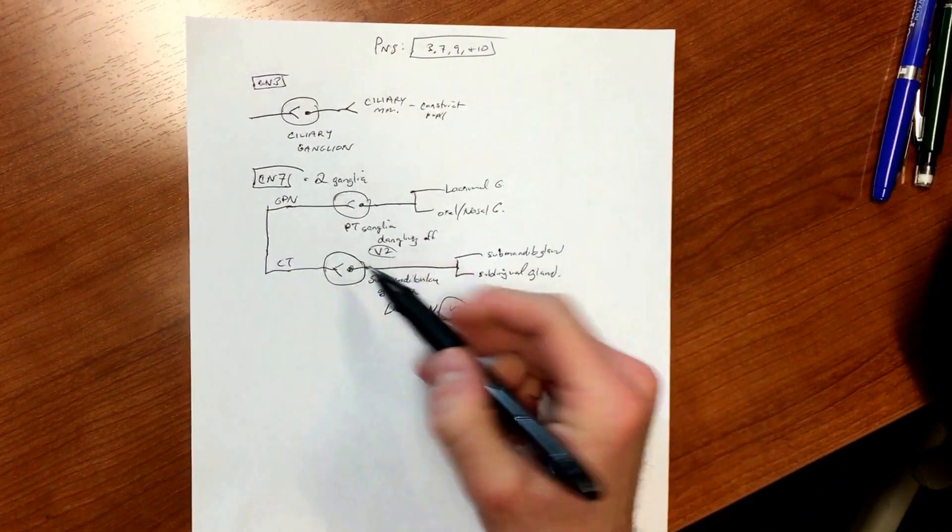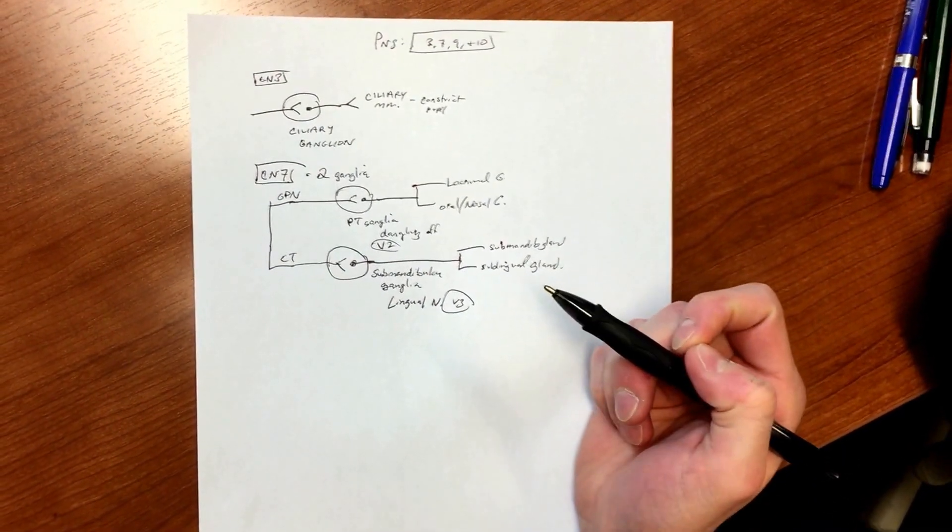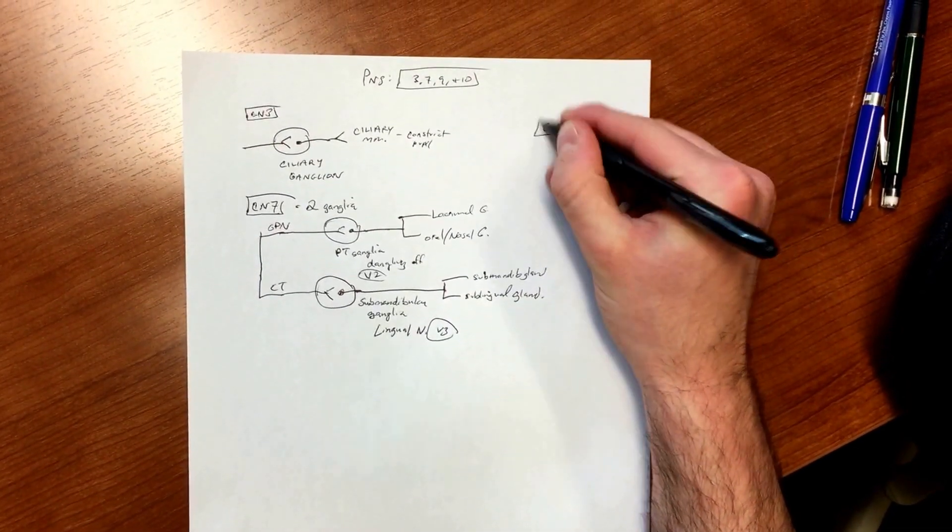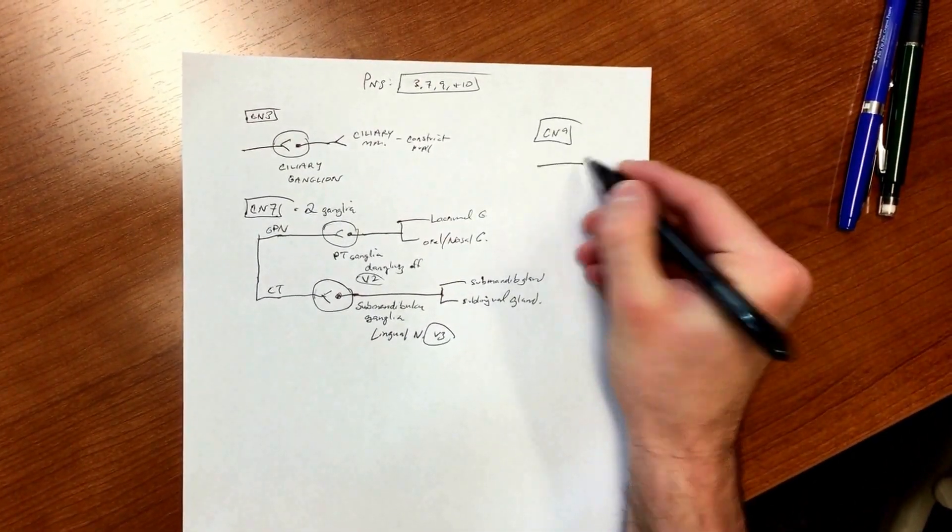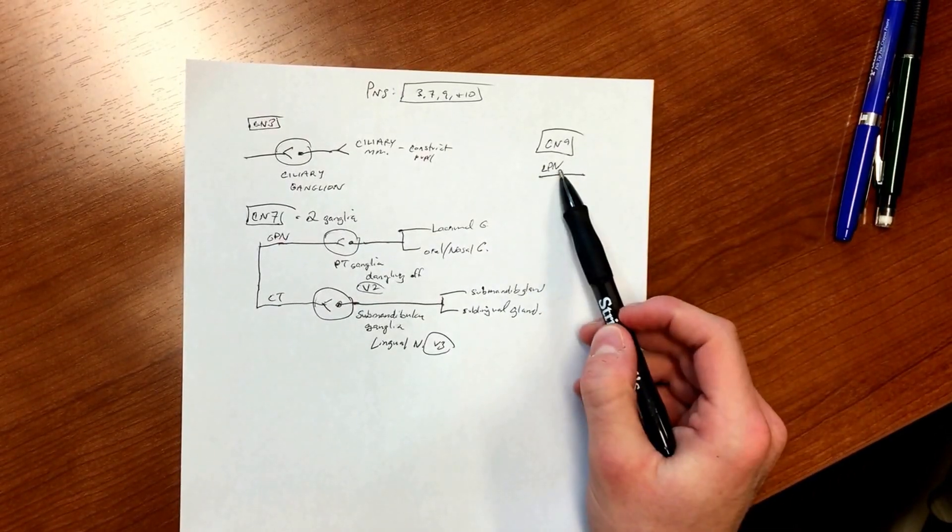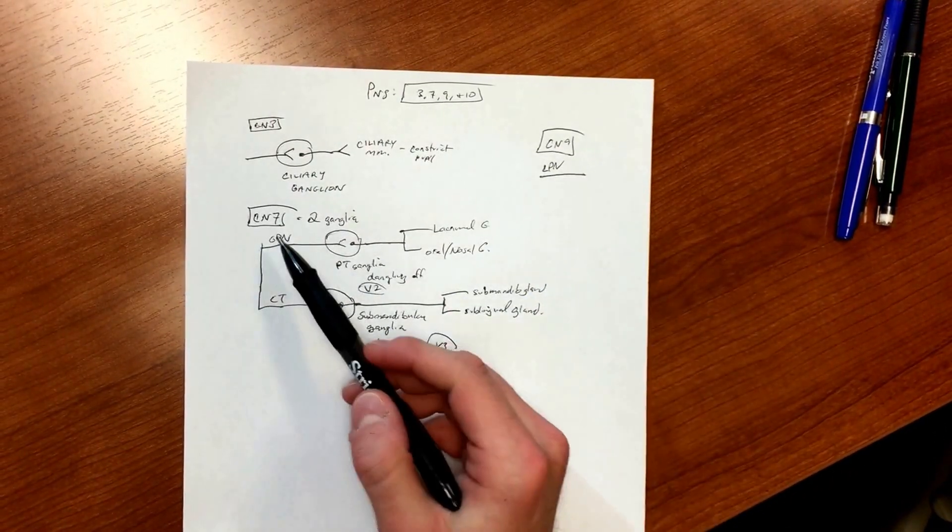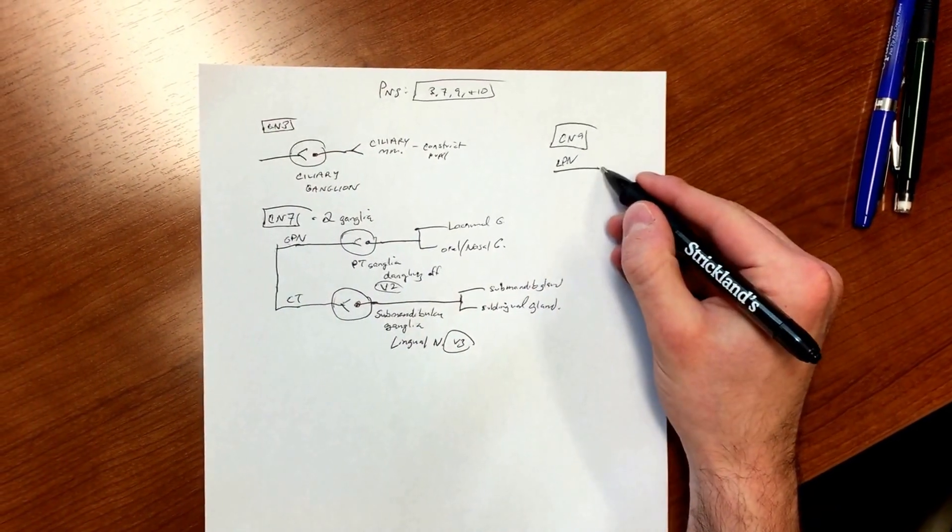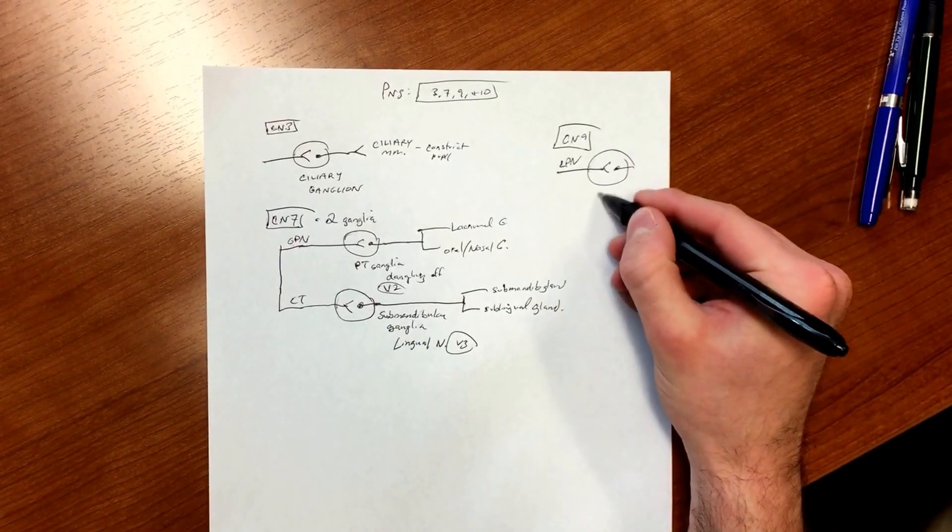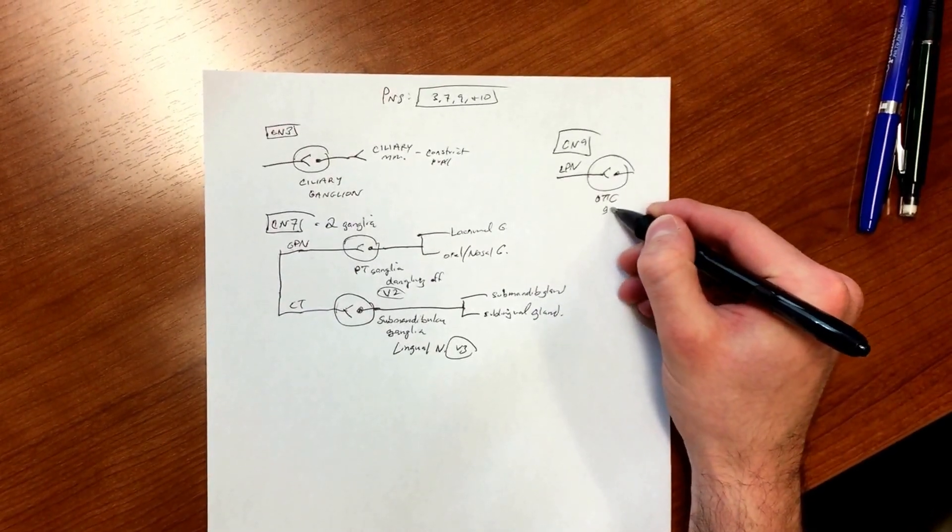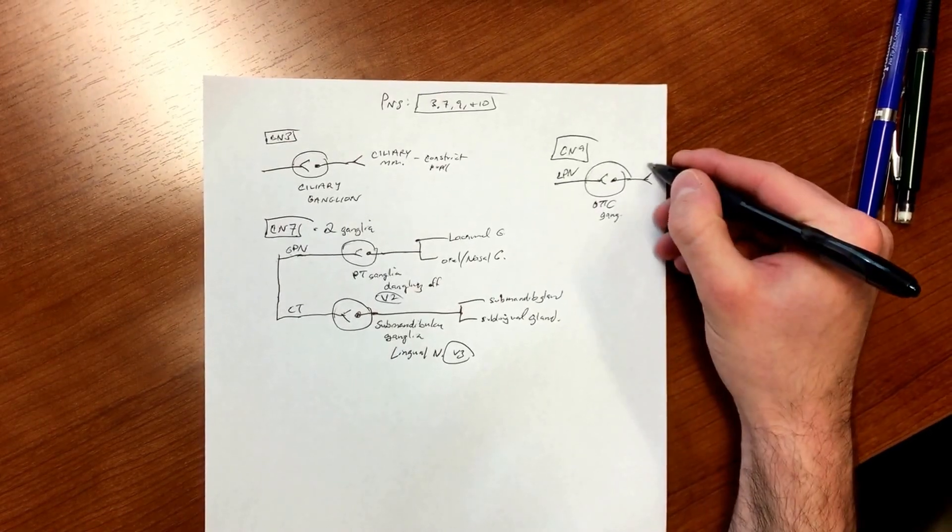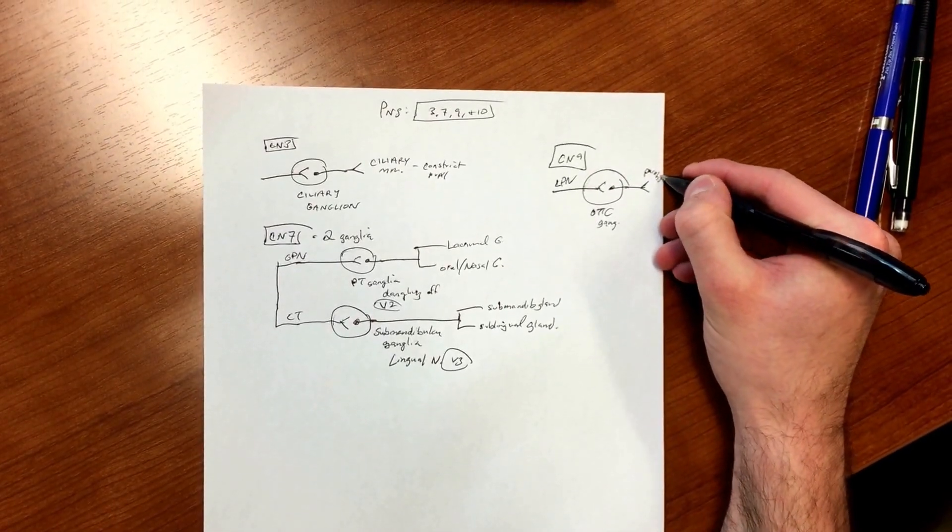So two more. There's cranial nerve 9, and cranial nerve 9 has lesser petrosal nerve. So that's a connection to be made - lesser petrosal off cranial nerve 9 and greater petrosal off of 7. Lesser petrosal goes on and synapses at otic, and it's going to go on to parotid gland, which I'm sure you guys have seen a ton of.